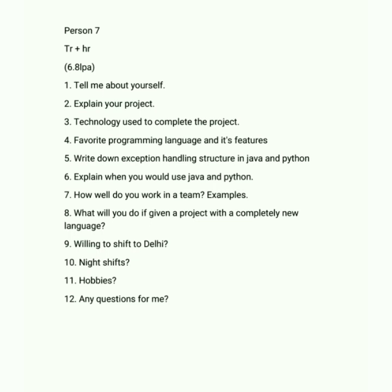For a candidate with 6.8 CGPA, the questions were again: tell me about yourself, explain your projects, the technology used, and your favorite programming language with its features. Make sure you know at least the features of C and OOP concepts. The next question was: write the exception handling structure in Java as well as in Python.